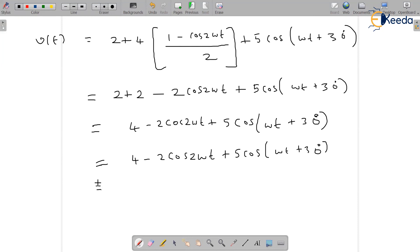This particular signal is passed through PMMC. So what is your answer? V_average is equal to 4 volts because PMMC reads only DC component.